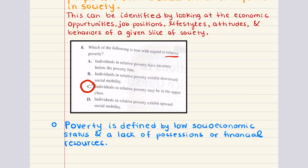Relative poverty is when one is poor in comparison to a larger population. For example, a millionaire living with billionaires in the same neighborhood would be considered to be in relative poverty. This contrasts with absolute poverty, which is when people do not have enough resources to acquire basic life necessities like shelter, food, clothing, and water. That is why the correct answer for eight is C.